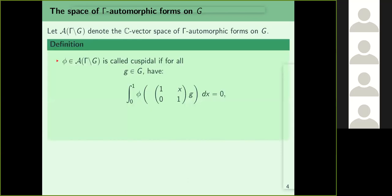I now want to introduce the notion of cuspidality. For classical modular forms or Maass forms, cuspidality meant that for every y, the integral from 0 to 1 of f(x+iy) dx equals zero. There is a similar condition for forms on G/Gamma. A phi in A(G/Gamma) is called cuspidal if for every g, the integral from 0 to 1 of phi of ((1 x; 0 1) g) dx equals zero.